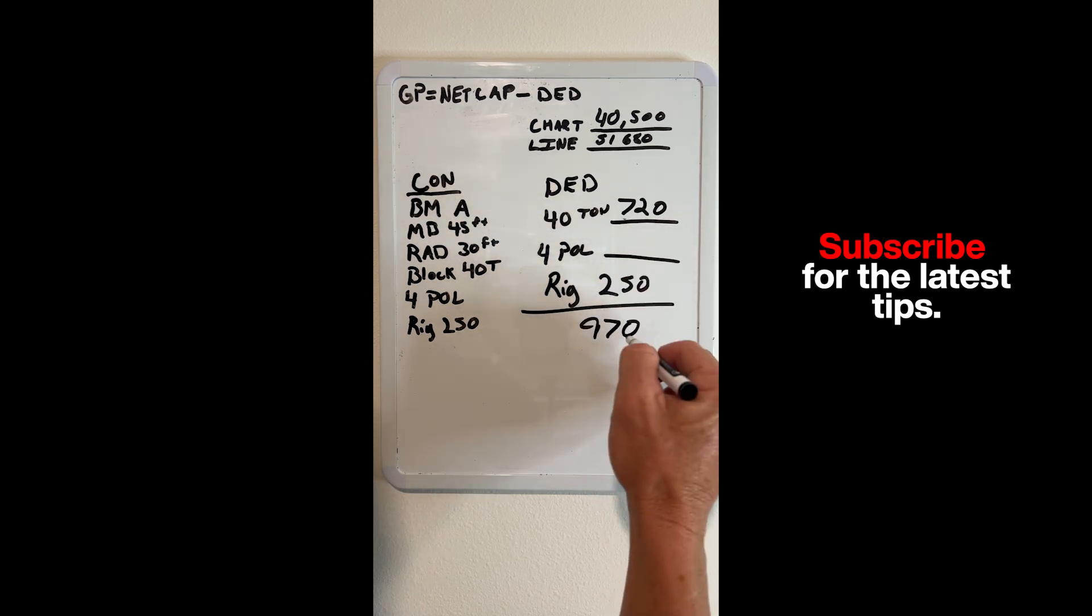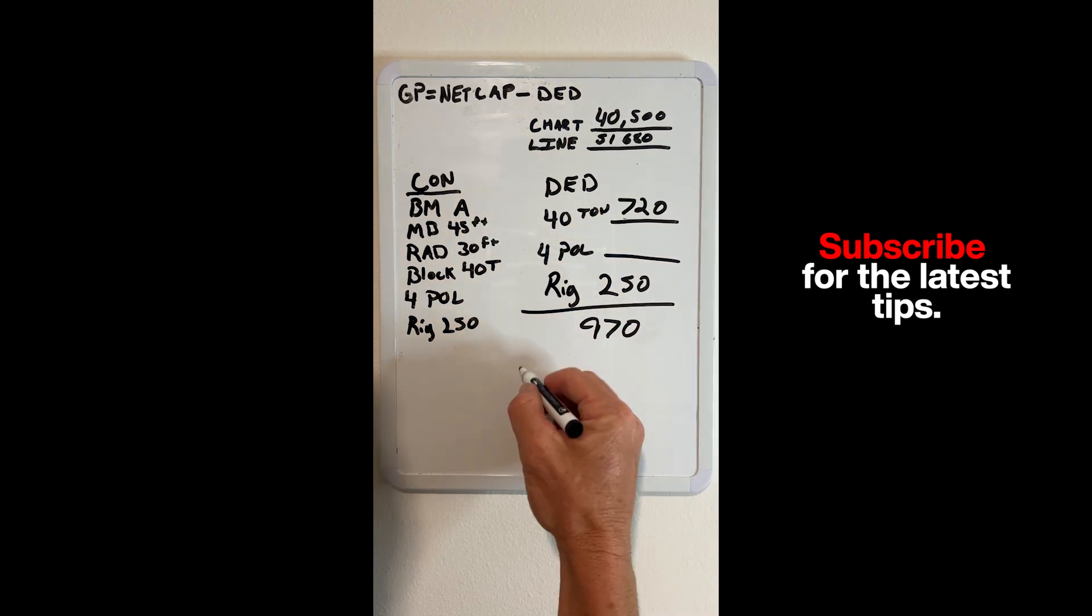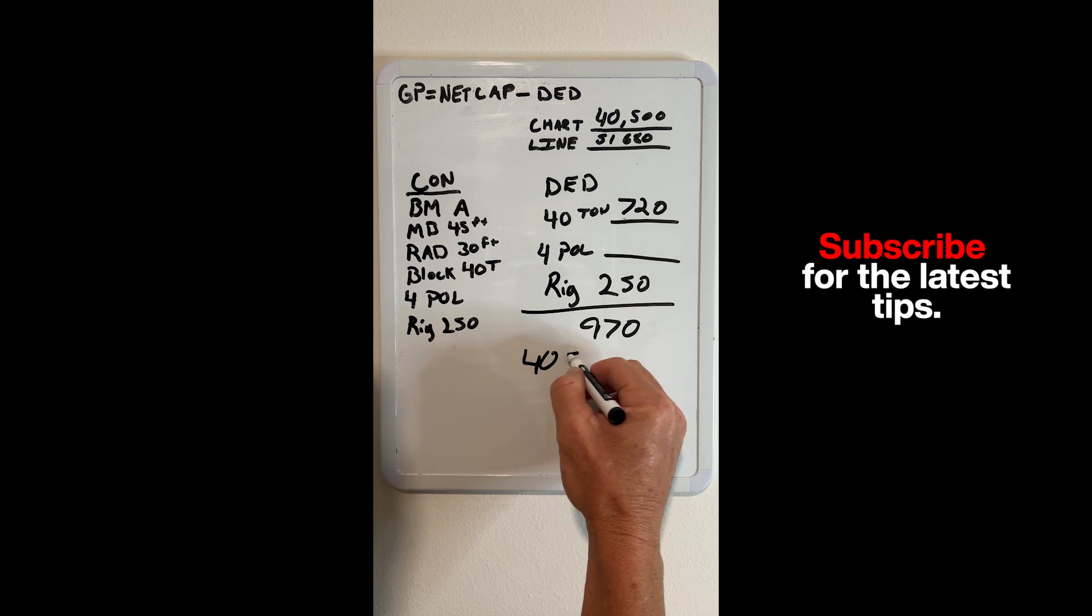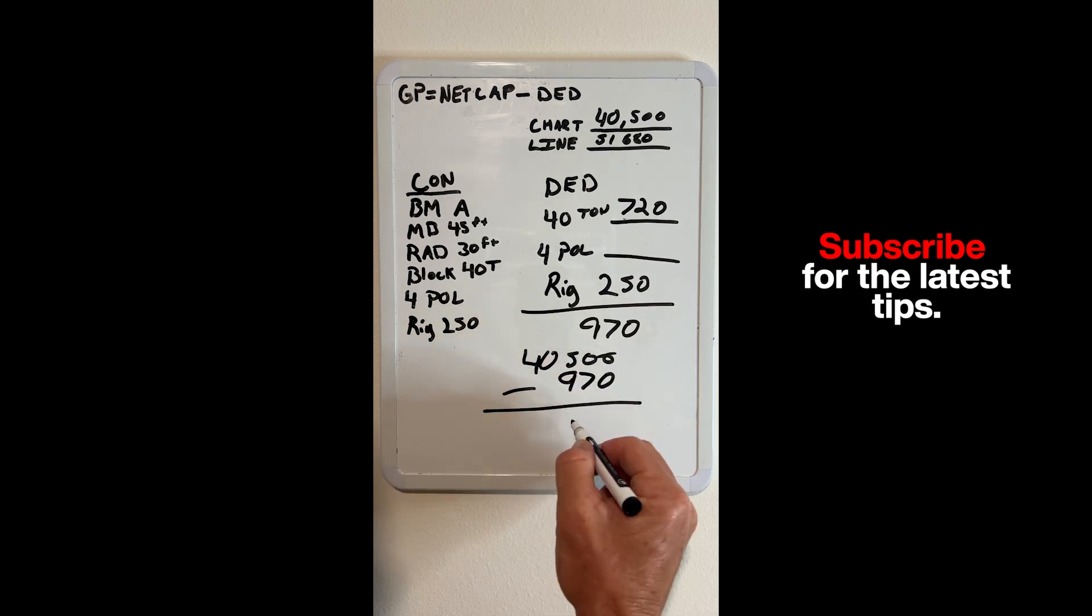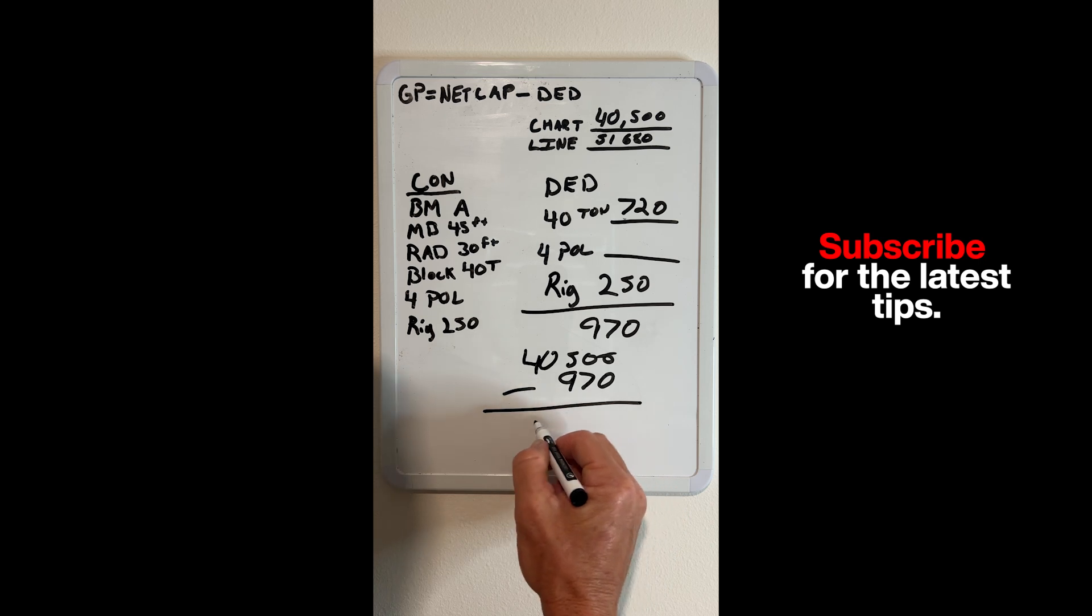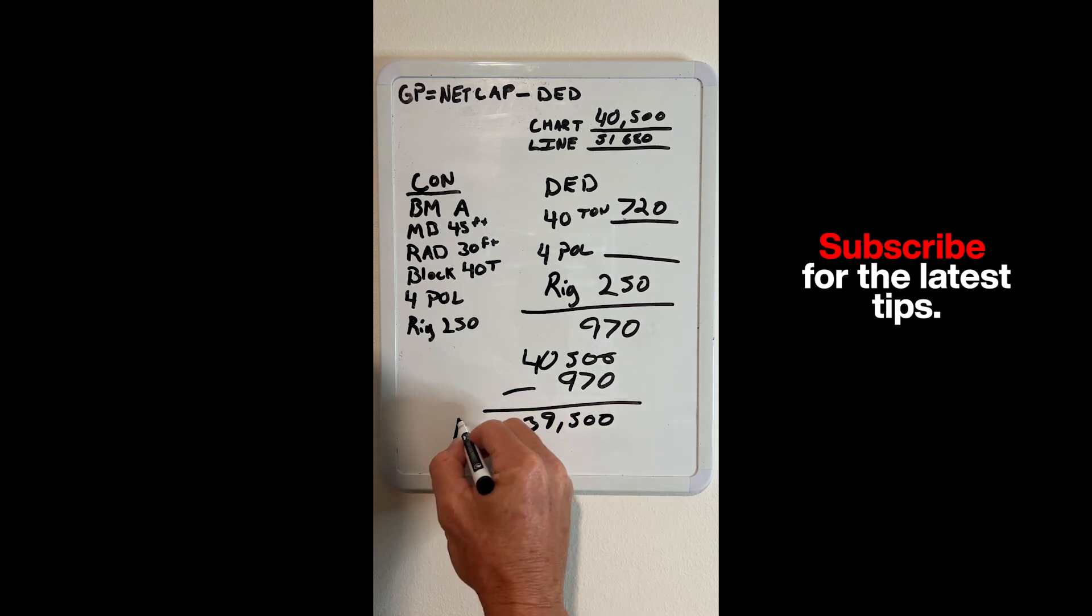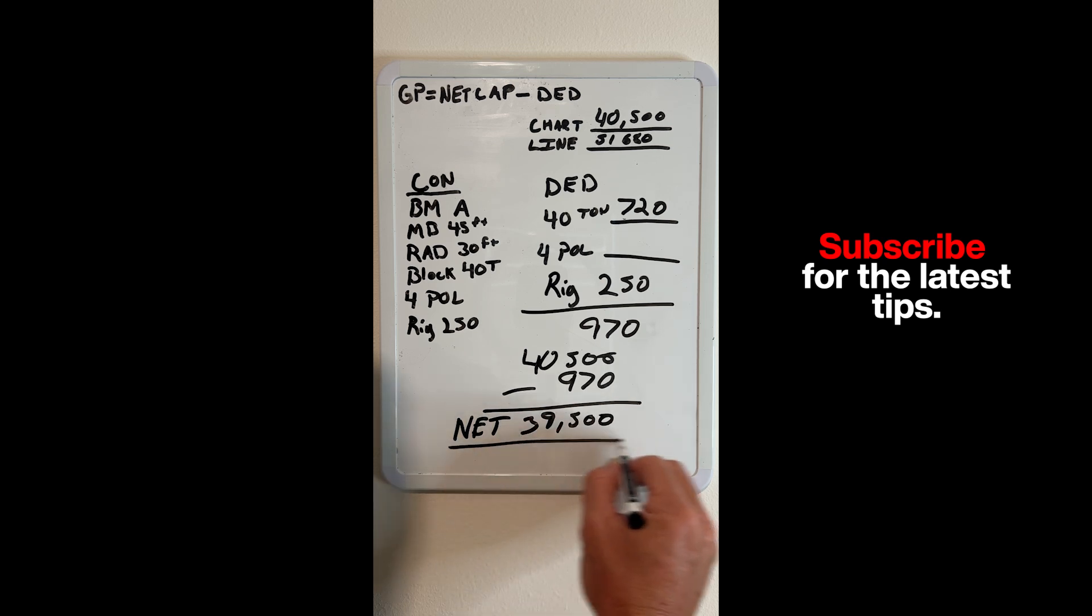Then we're going to take our deductions, which is 970, minus our gross capacity. So 40,500 minus 970, and that is going to give us an answer of 39,530. This is our net capacity over the front.